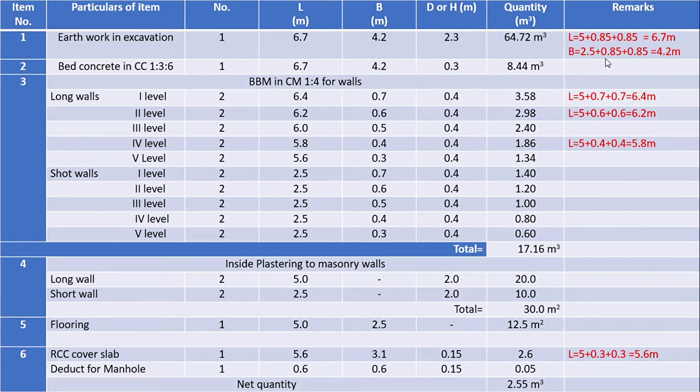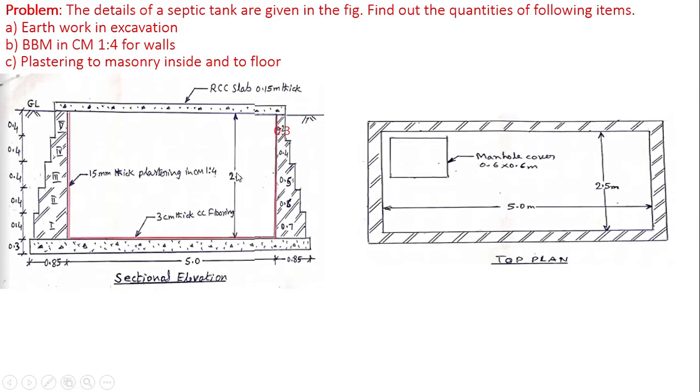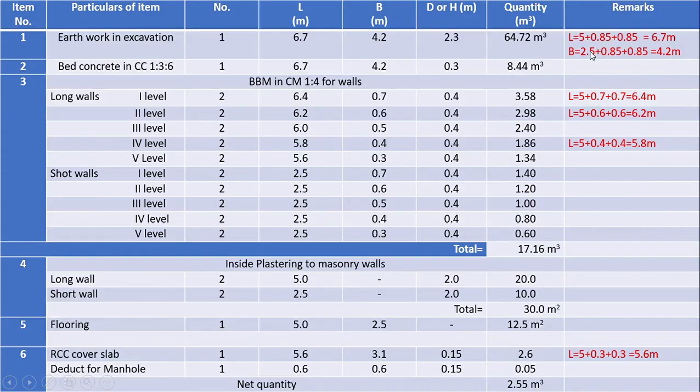That is 2.5 meters plus wall thickness at the bottom at both sides, 0.85 plus 0.85. Therefore, total width of excavation is equal to 4.2 meters. Depth of excavation is equal to total of thickness of bed concrete plus clear inside height up to ground level 2 meters. Therefore, total depth of excavation is equal to 0.3 plus 2 is 2.3 meters, and quantity of excavation is the product of length into breadth into depth, equal to 64.72 meter cube. Item 2: bed concrete.